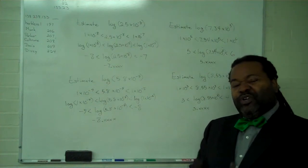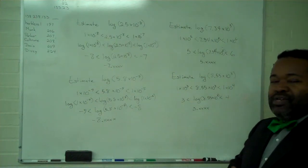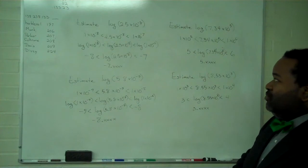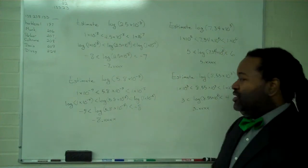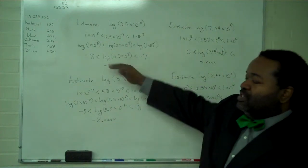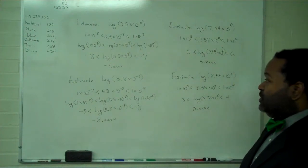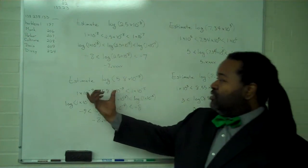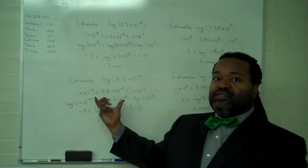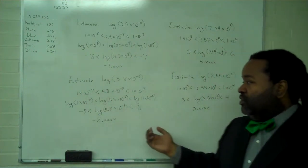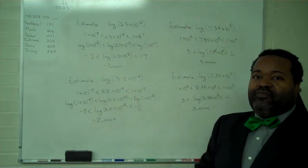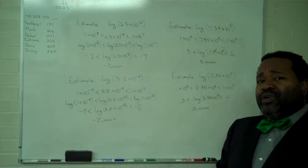And so with this very straightforward estimation technique, you can find a fancy calculator with all of the scientific functions on it and actually compare these estimated values against the exact values to verify for yourself that using this method of squeezing the number between two powers of 10, taking the logarithm of everything, and then using that to find a single-digit range, actually works.